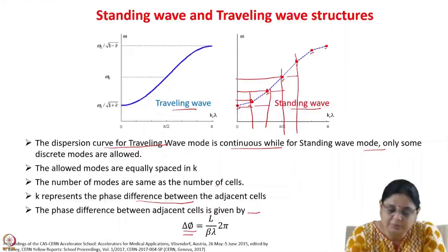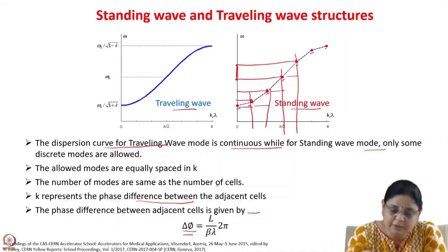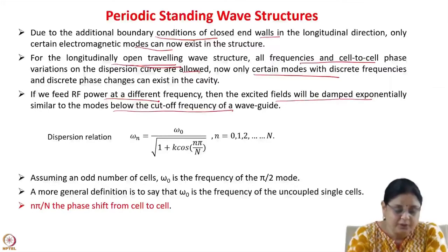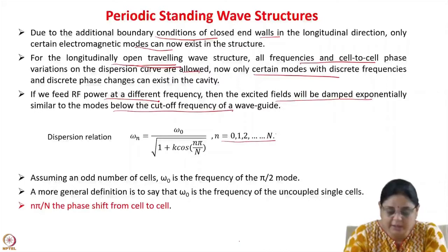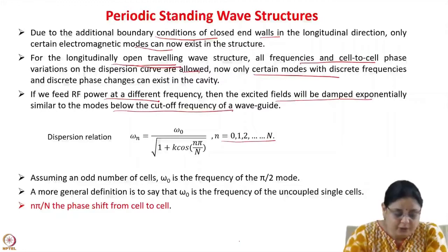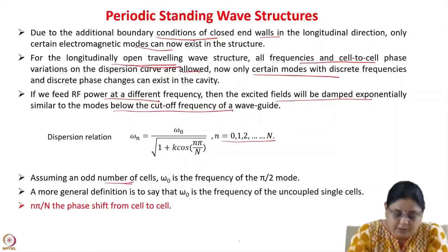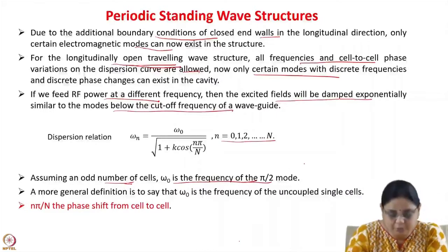You have to see what the frequency of these modes is, and accordingly feed in power. If you feed in at any value in between, it will be reflected back or damped exponentially. The dispersion relation is given as ωₙ = ω₀ / √(1 + cos(k·cos(nπ/N))), where n takes values from 0 to N, and N is the number of cells in the cavity. ω₀ is the frequency of the π/2 mode.